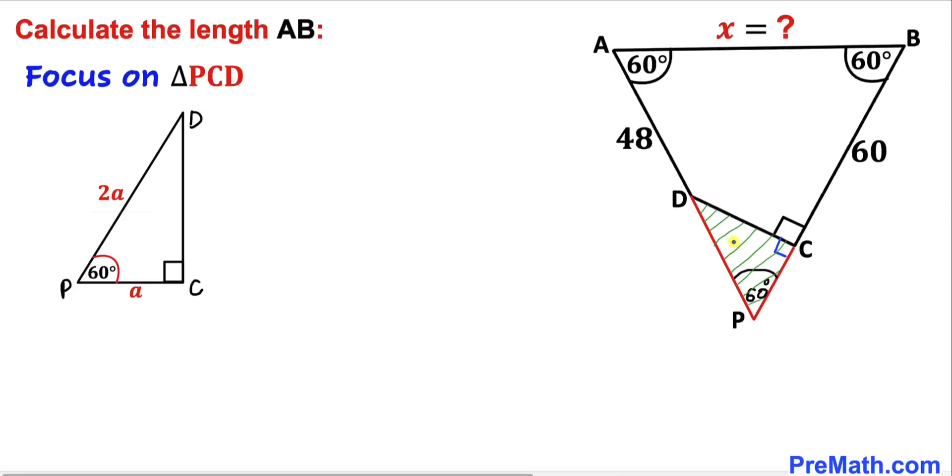Now let's focus on triangle PCD. This is a 30-60-90 special triangle. In such a triangle, the longest leg is twice the length of the smallest leg. Let's call side PC as 'a' units, then the longest leg DP is 2a.